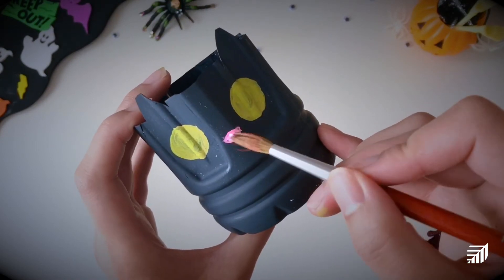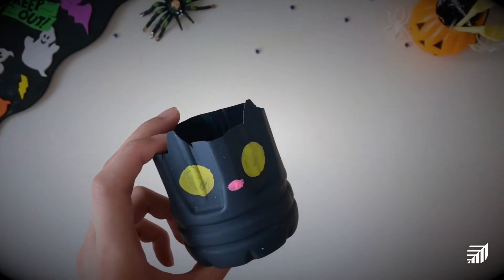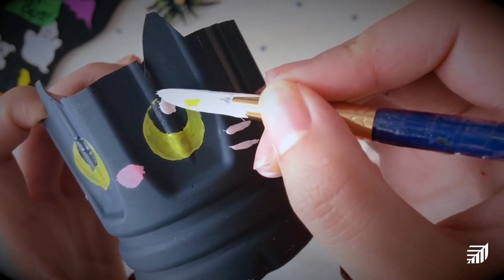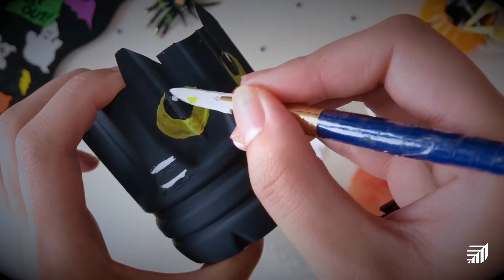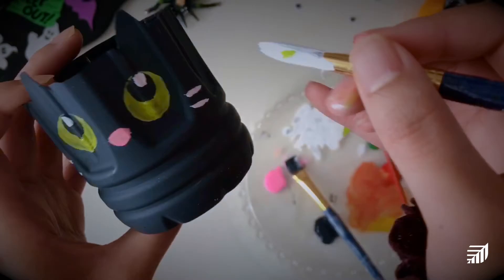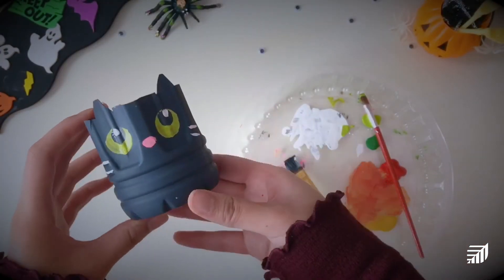I'm going to add a little pink nose to my cat and some more details to the eyes and whiskers. You can decorate your bottle however you like, just make sure to let the different layers dry before painting.